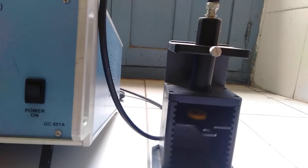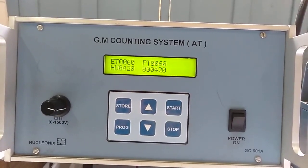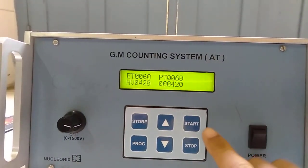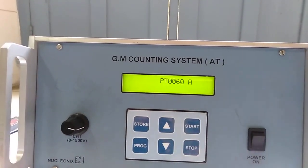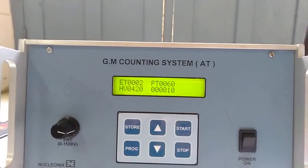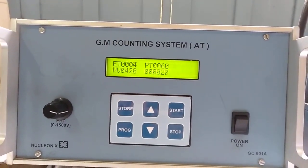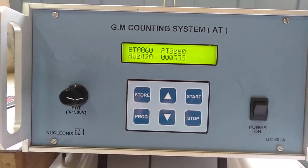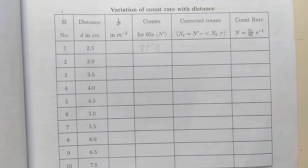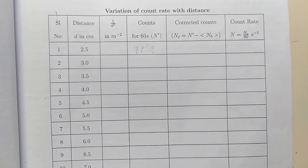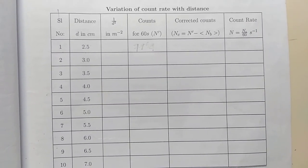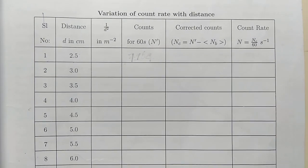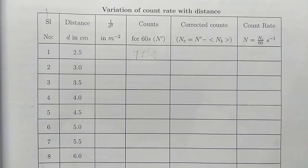Repeat the same procedure — that is, record the counts by pressing the start button for the same preset time of 60 seconds. The counting system starts counting. The counts obtained for 60 seconds are noted down. Now subtract the background count from the recorded count to get the corrected counts.